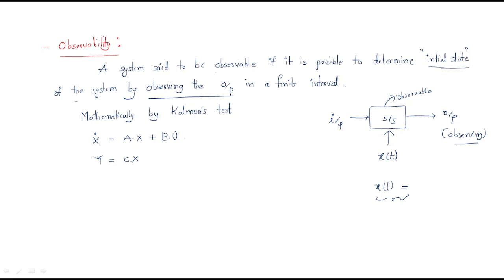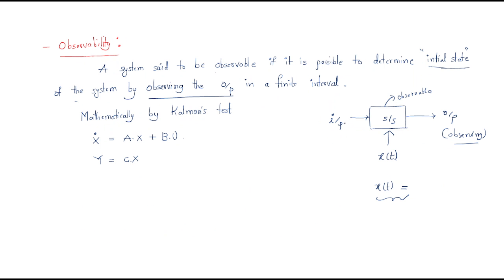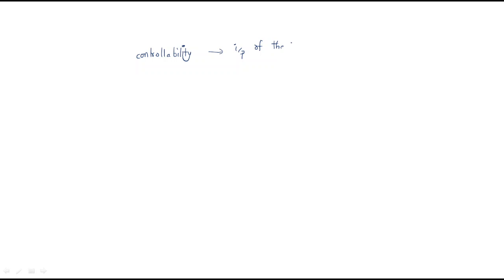To summarize the difference: controllability means we can change the state of the system from 'a' to 'b' by varying the input — so controllability is related to the input of the system. Observability means we can determine the initial state by observing the output — so observability is related to the output of the system.